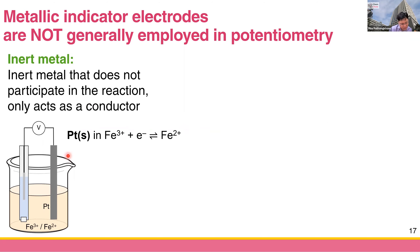The third kind is the inert electrode. For example, if you want to measure the concentration of Fe³⁺ and Fe²⁺ ions, this half cell doesn't have any solid. So you need some inert metal to conduct electricity and measure the potential. Platinum is the common inert metal used for this purpose. To summarize the three types: the first kind is a solid metal to detect the ion of that metal; the second kind is a solid ionic salt to detect the concentration of the anion; the third kind is just the inert electrode.